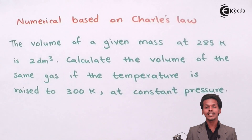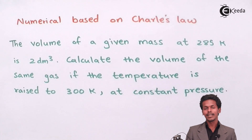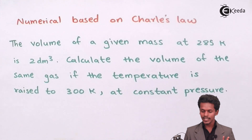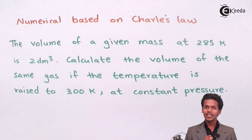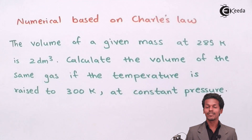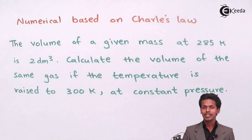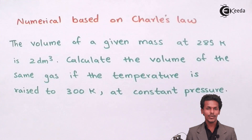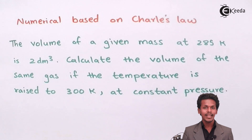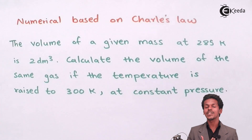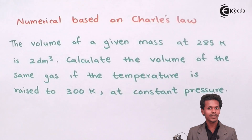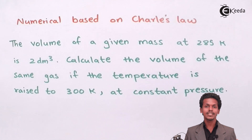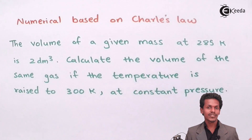Since both volume and temperature are mentioned and pressure is kept constant, we can clearly say that this problem is based on Charles Law. Now the first thing we are going to do is extract the data from the question, so it will be easy to understand and solve the numerical.